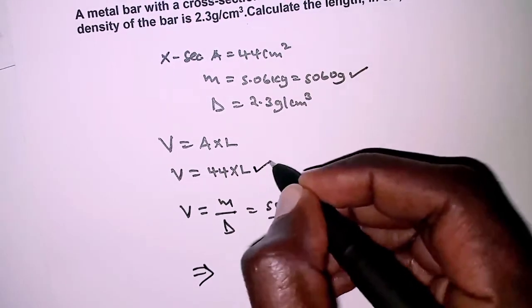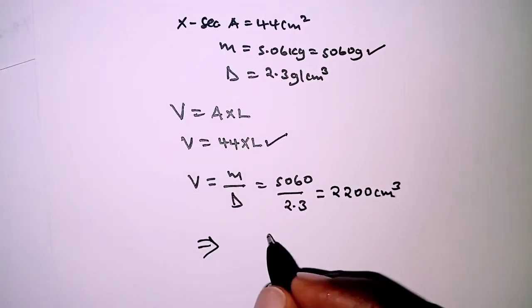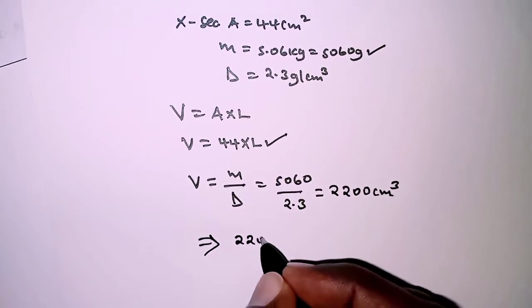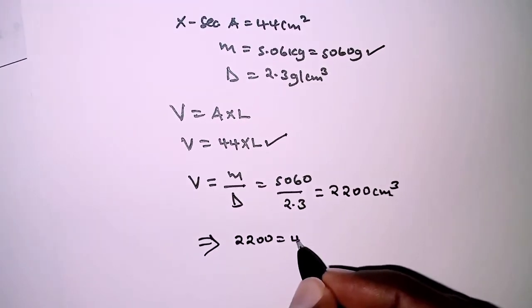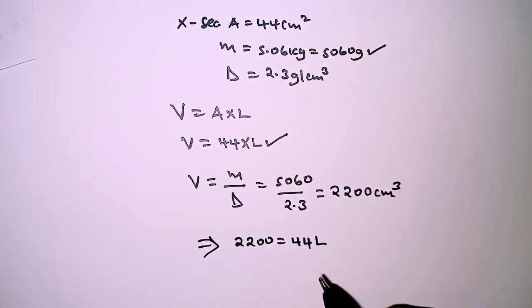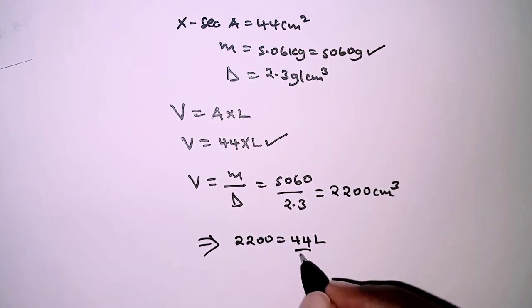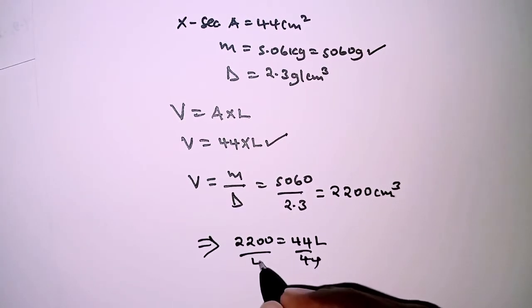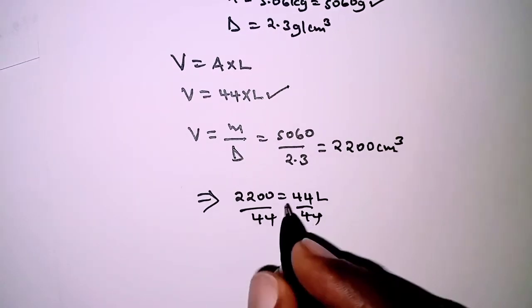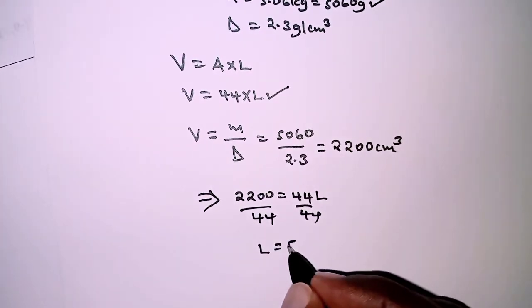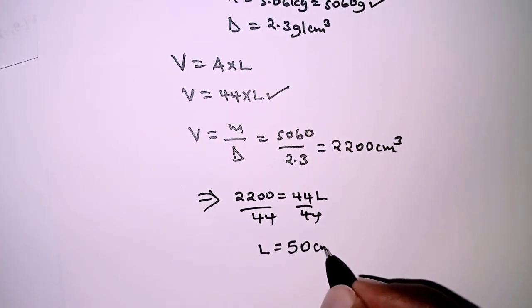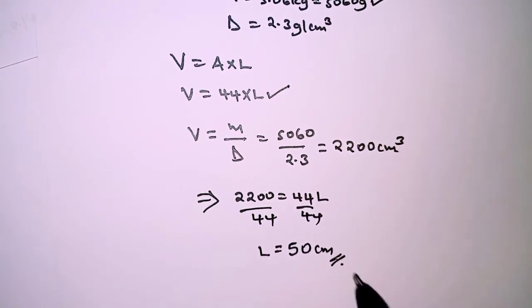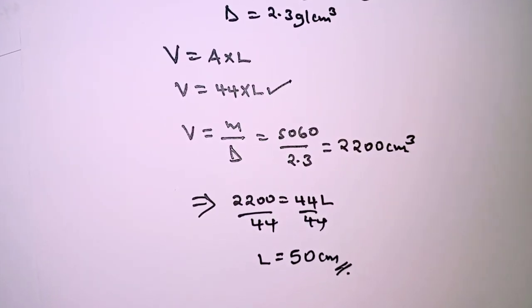From this we can come and substitute back, so we have 2200 equals 44L. Therefore, dividing both sides by 44, we will have the length of the metal bar as 50 centimeters. That is it for this question.